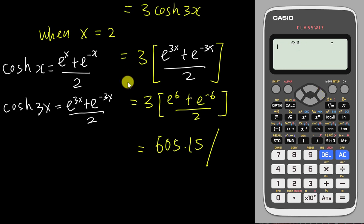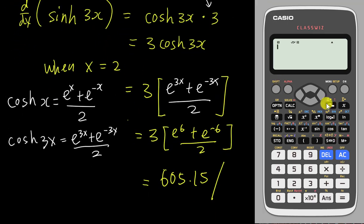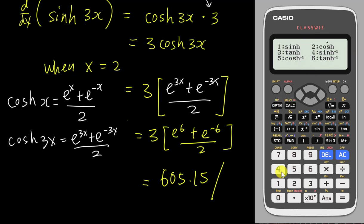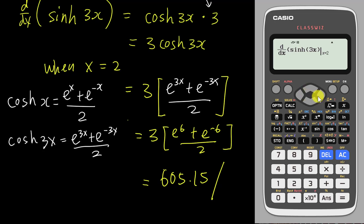Now, to use the calculator to test whether my differentiation answer is correct, I press shift differentiation, then tell the calculator to differentiate hyperbolic sine 3x — go to the option, choose hyperbolic function, choose hyperbolic sine, type 3x, set x equal to 2. You'll get a syntax error because you need to add a closing bracket after 3x. Once you do that, you get the correct answer.